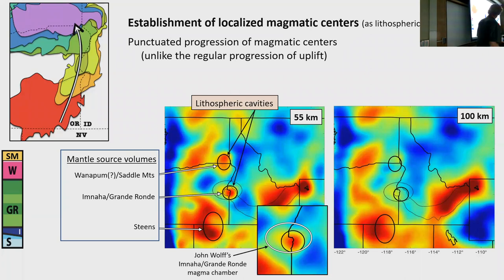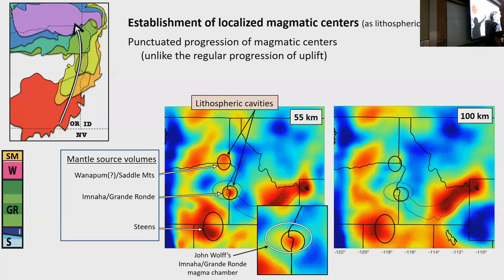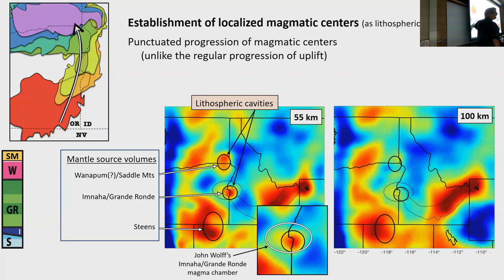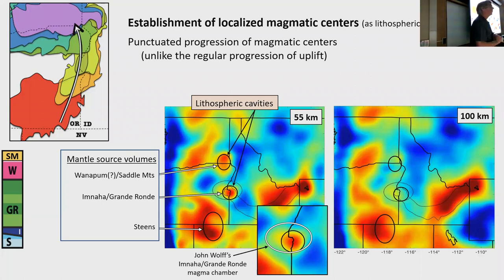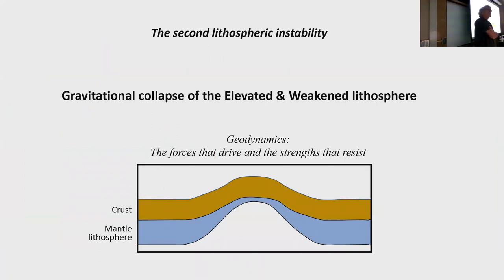There are two cavity-like areas within North American lithosphere at shallow mantle depths — not the Farallon slab but actual holes in the North American lithosphere. One is where John Wolf and most people would say the main magma chamber was, probably feeding the Imnaha which rapidly evolved into the Grand Ronde. The Grand Ronde erupted in dikes propagating north — the magma apparently came from there. There's another cavity at the northern end, possibly the source for Saddle Mountains flows, which are geochemically different enough to require a separate chamber.